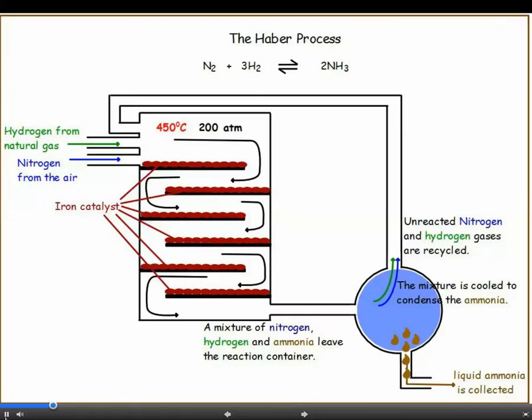You need to know a lot about the Haber process. Nitrogen from the air and hydrogen from natural gas react at about 450 degrees Celsius and 200 atm pressure. An iron catalyst is used. Make sure that you can write the word equation, the balanced symbol equation, and give the conditions needed for this reaction.